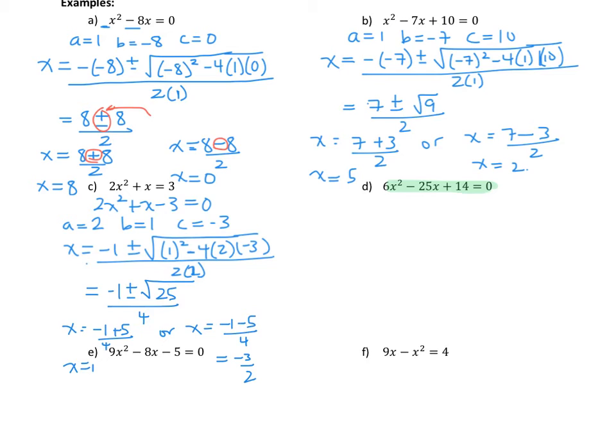All right, so this one was one that we could not factor. We're going to go ahead and use the quadratic formula here. Our a value is 6. I do have the 0 already here. Our b value is negative 25, and our c value is 14. So because this one does not factor, we would have to use the quadratic formula here.